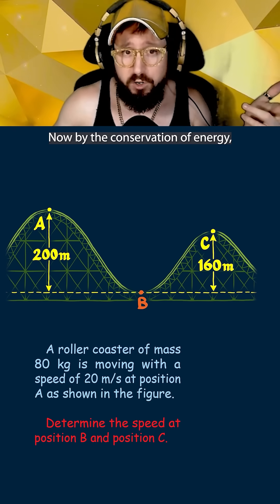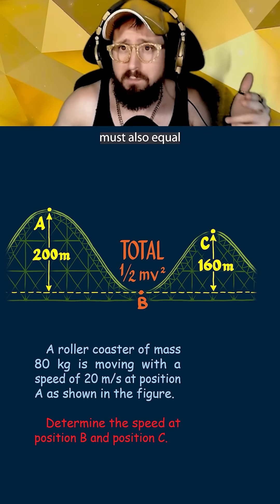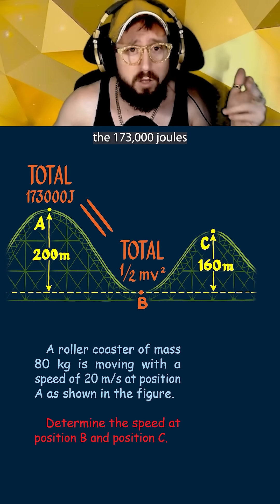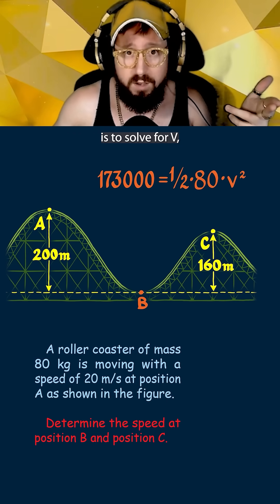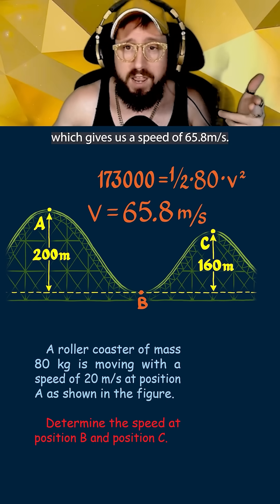Now by the conservation of energy this total energy at point B must also equal the 173,000 joules of total energy at point A. So all that's left to do is to solve for V which gives us a speed of 65.8 meters per second.